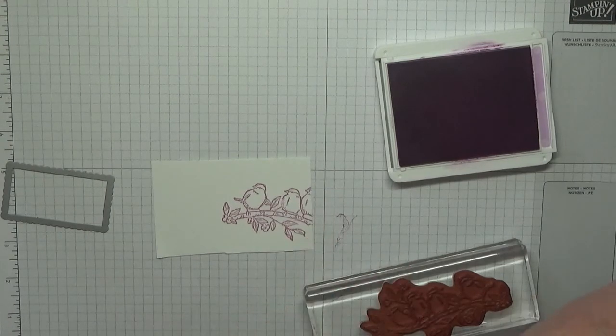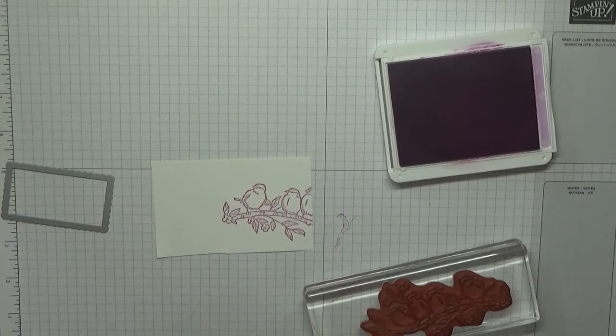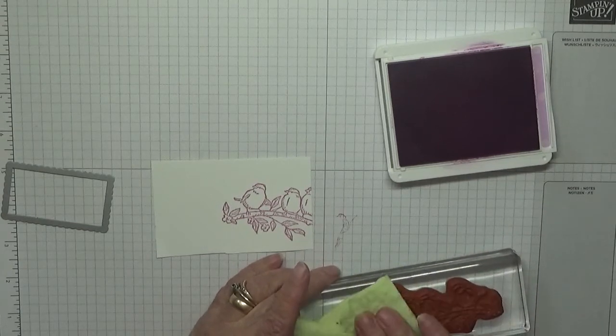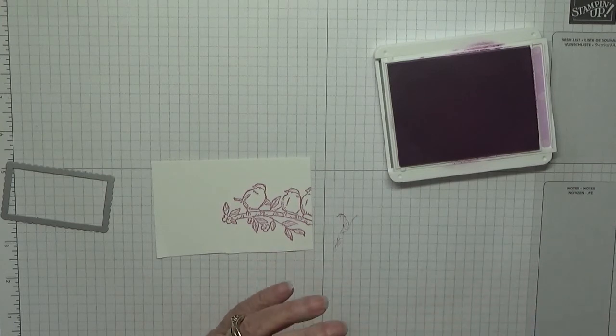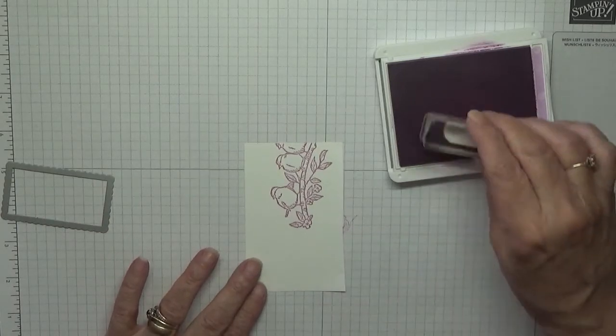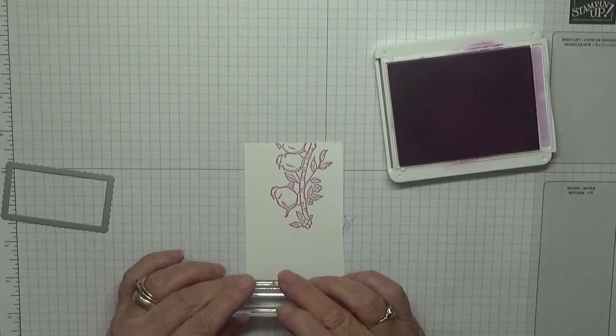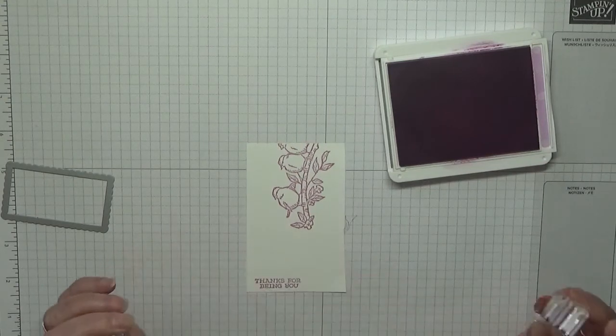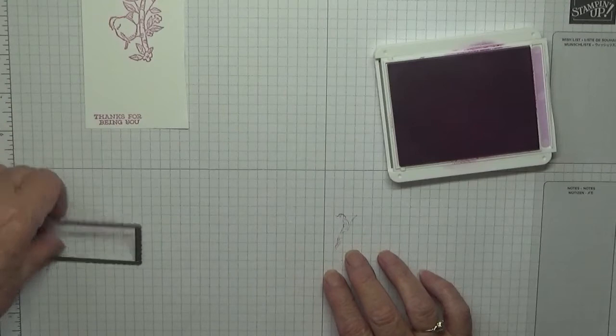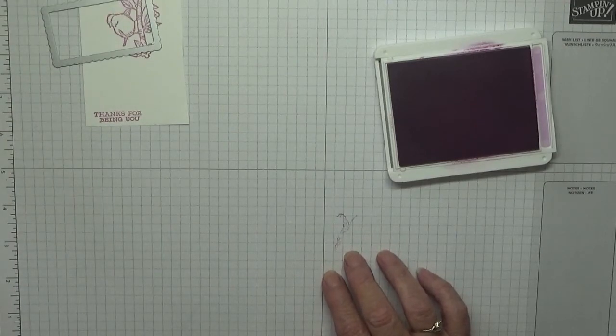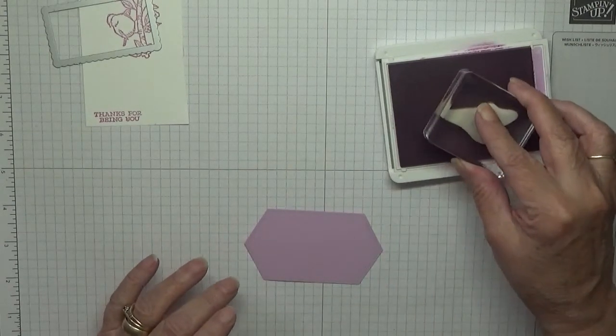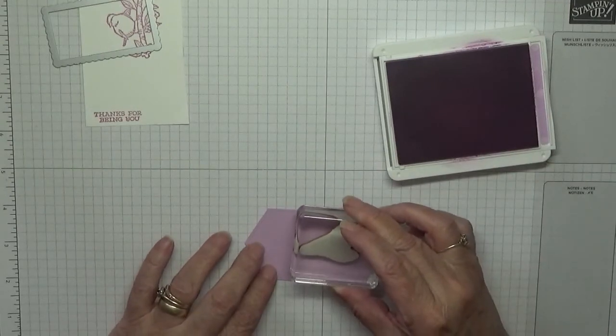Get my cleaning cloth out, nice and wet. I just washed them. I should leave that for washing properly afterwards. Now then, for the sentiment, I'm just going to stamp that down there: Thanks for Being You. We'll cut that out shortly. On this die cut here, what I did was stamp some leaves.